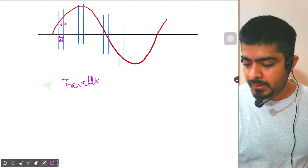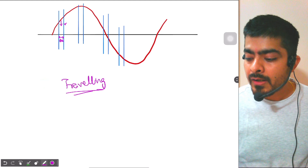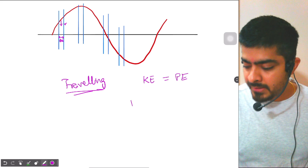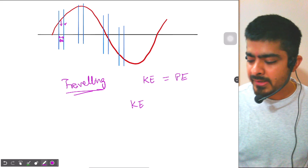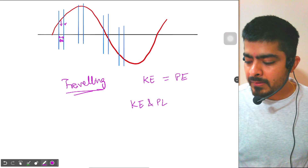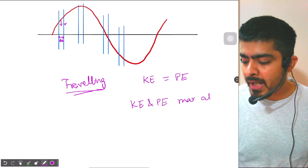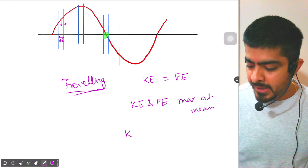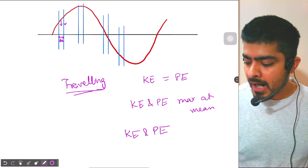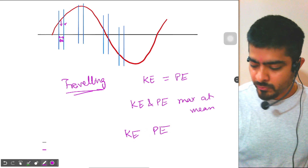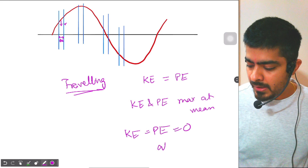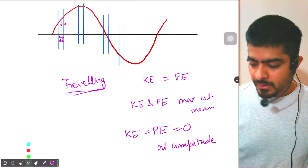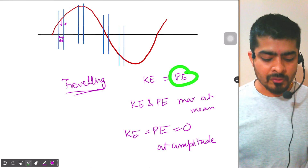For a travelling wave: KE and PE are both maximum at the mean position, and KE and PE are both equal to zero at the amplitude. Now regarding the potential energy, let me give you a visualization using Desmos. I'll add a condition to observe a specific particle between x = 1 and x = 1.1.